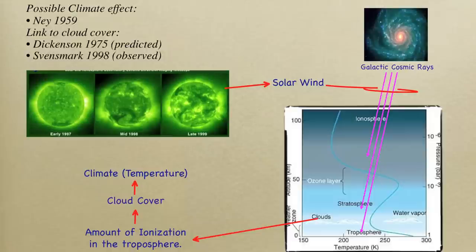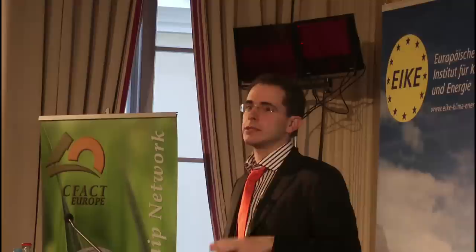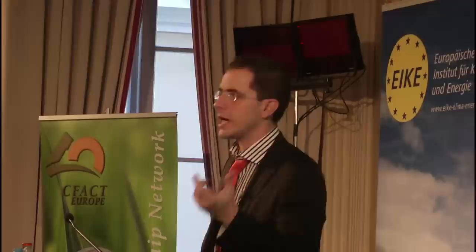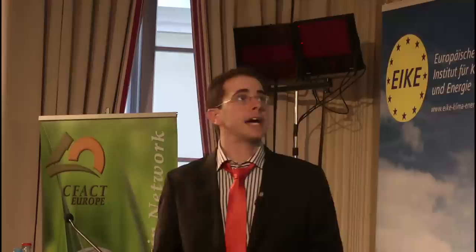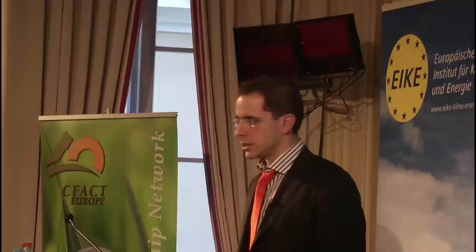It was suggested already in 1959 by Edward Ney that if there would be some climatic variable sensitive to the amount of atmospheric ionization, you would immediately get a link between solar activity and climate. In the 1970s it was suggested that the number of cloud condensation nuclei, or their formation, could depend on the flux of cosmic rays or the number of ions in the atmosphere. In the 1990s, observational evidence demonstrated that cloud cover indeed follows the flux of cosmic rays reaching the Earth.